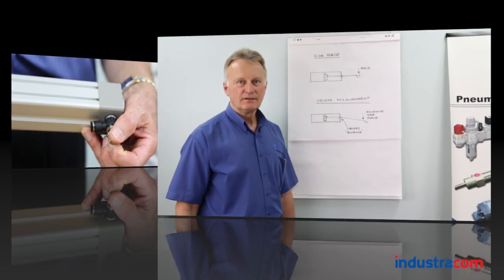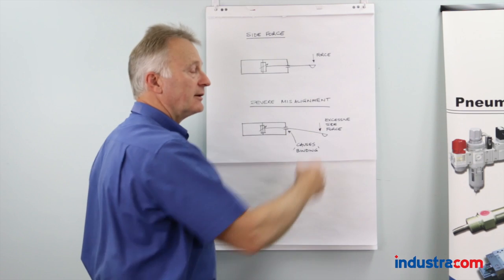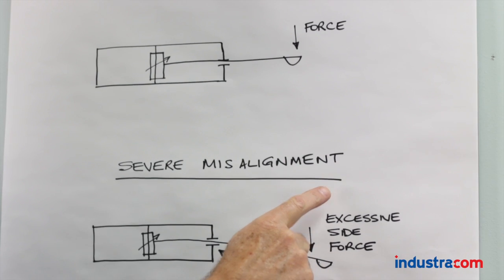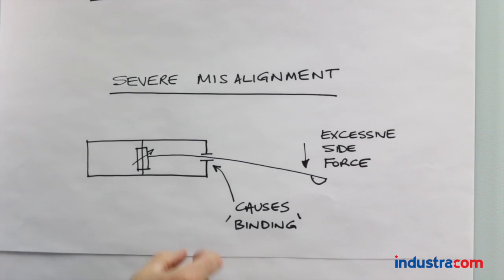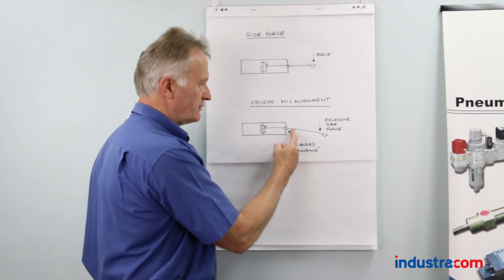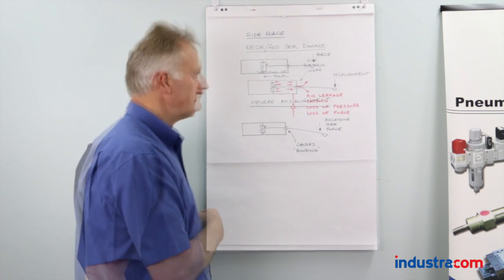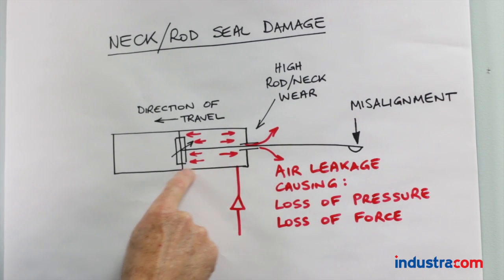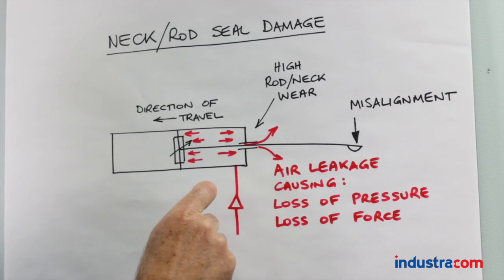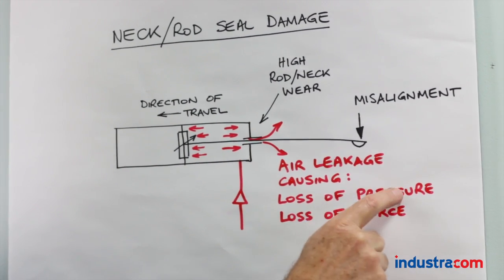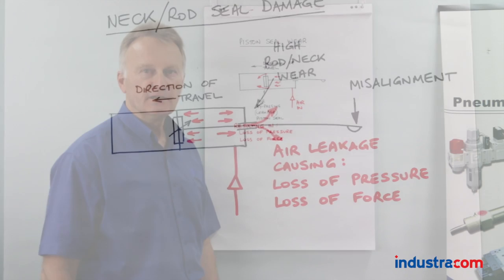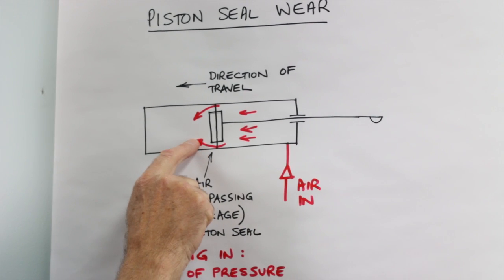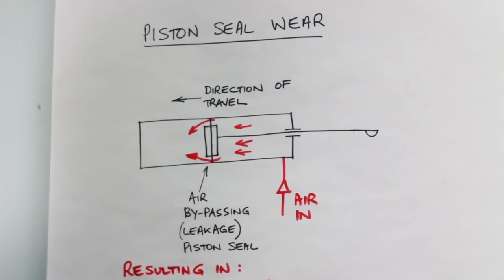An air cylinder is designed to take a certain amount of side force or side loading — up to 15% of the thrust depending on stroke — but over time wear and tear can cause misalignment, applying excessive side force to the piston rod. This can cause binding around the neck area and wear in that area as well. A diagram shows that misalignment causes high wear on seals, eventually leading to leaks and loss of pressure and force. Similarly, piston seal wear over time causes bypass, resulting in loss of pressure and loss of force.